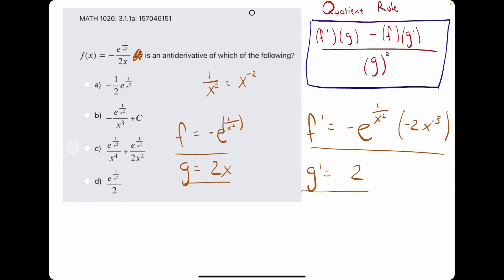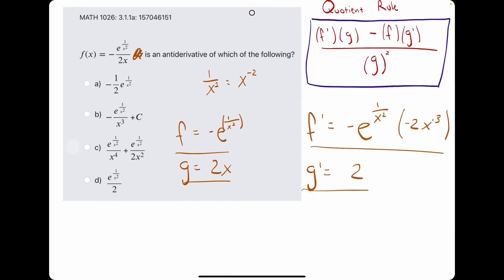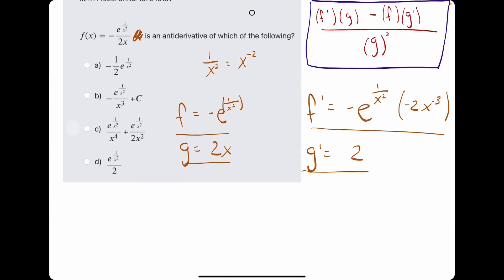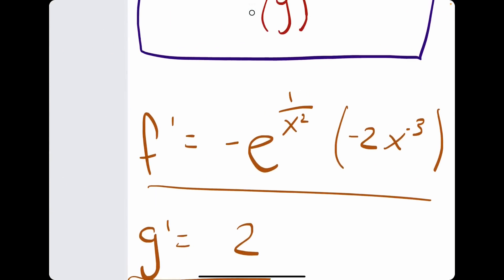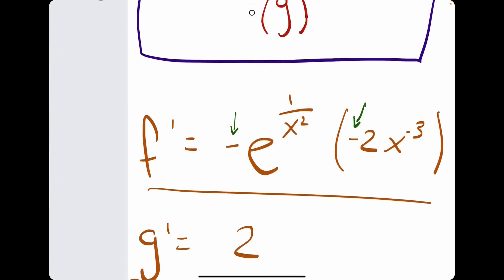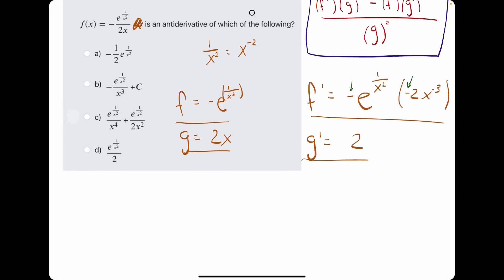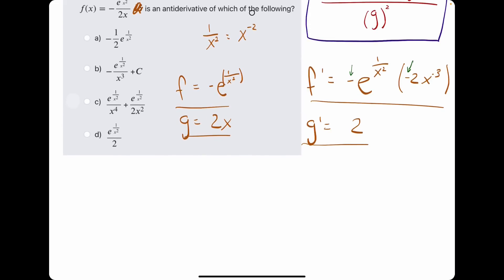So, we have all our pieces. It's now just a matter of plugging them in there. So, we have f prime. What I'll go ahead and do is kind of simplify f prime by canceling out these negatives, because the negative times a negative is a positive. So, I'll call it positive e to the 1 over x squared.